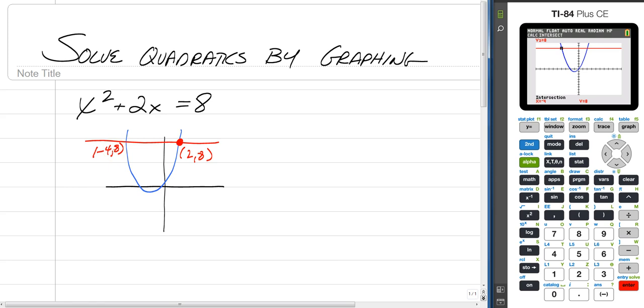So our solutions are the x values, remember we're solving for x. So we have x is equal to negative 4, and a positive 2. And there you have it, that's it. That's how you use your graphing calculator to solve a quadratic.